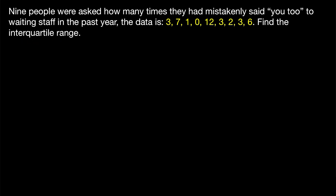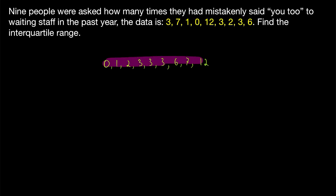The first step is to put our data in order from least to greatest, or greatest to least, assuming that it isn't already given to us in order. Putting this data in order from least to greatest gives us this list of data.